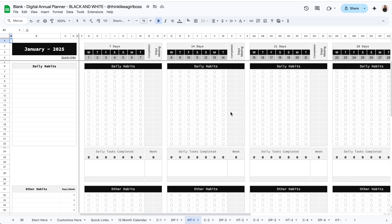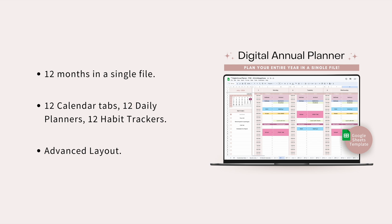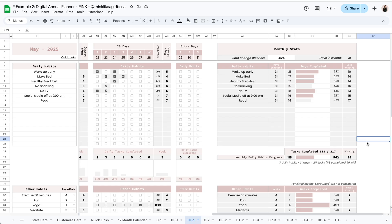So just to recap: for the monthly version you have to create a new file every month — you save a blank copy and start over on a new file each month. If you're looking for something simple and want that sense of a reset every month of starting from scratch, you'll want the monthly version. If you prefer to have one big file with everything — something more advanced and elaborate with more features — then the annual version is for you. This was just a quick overview; I also have detailed videos on each template linked in the description in case you want to learn more.